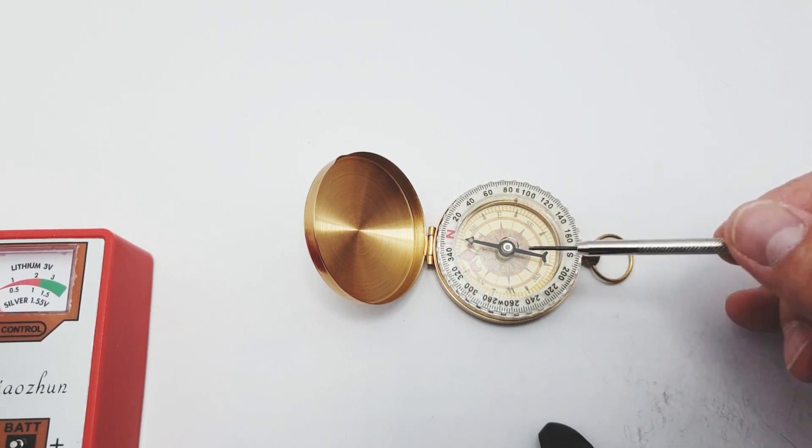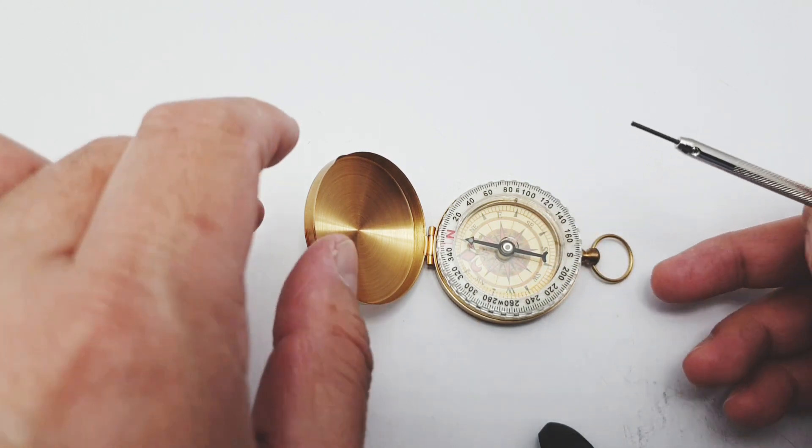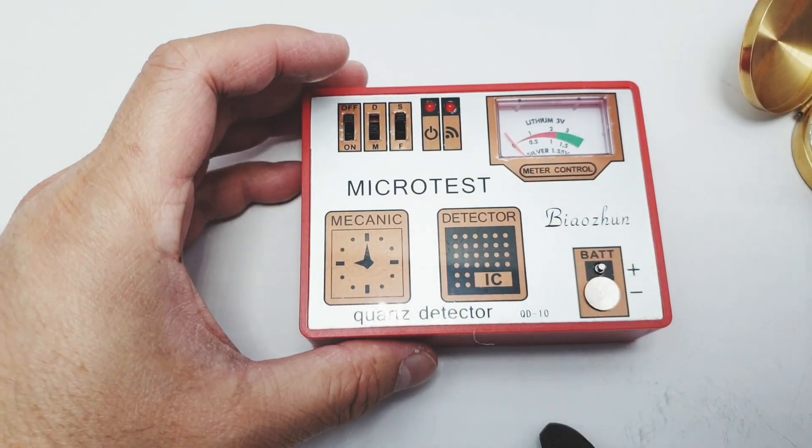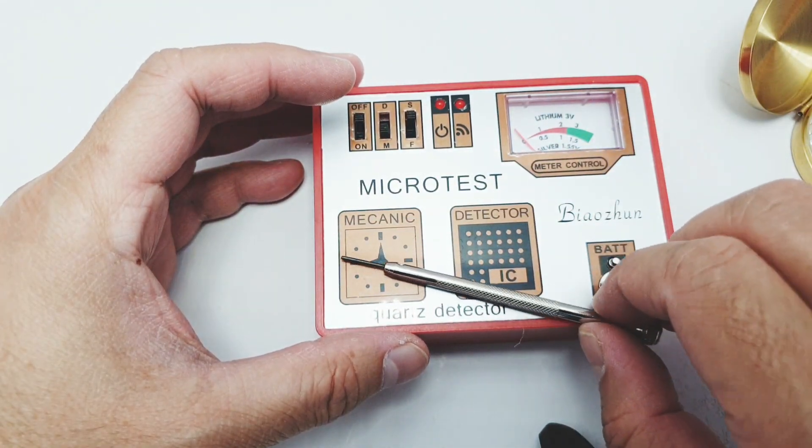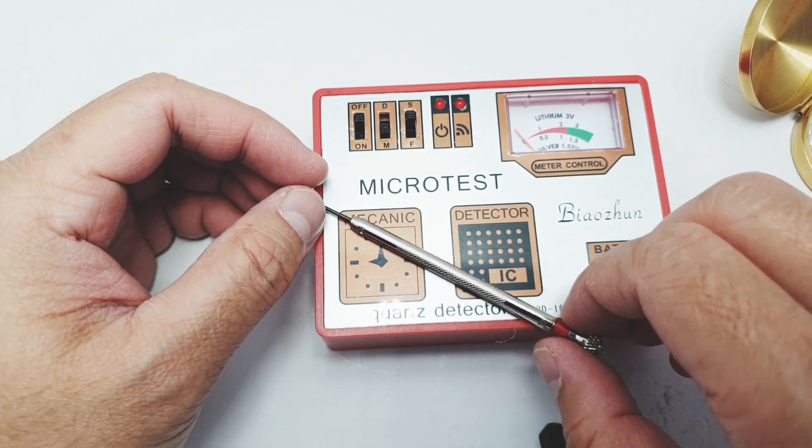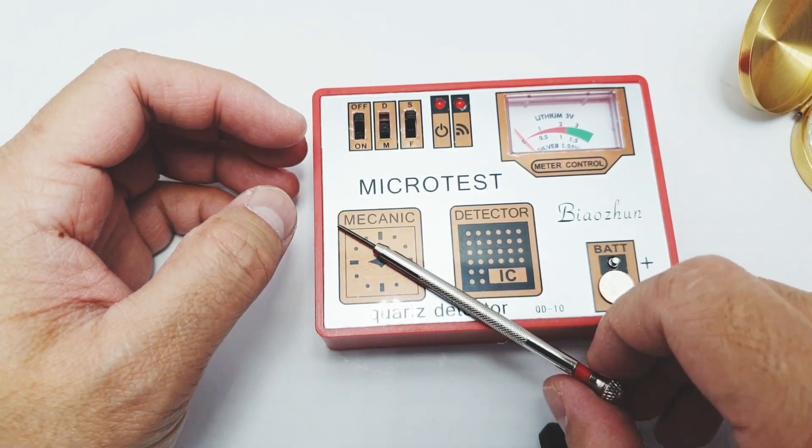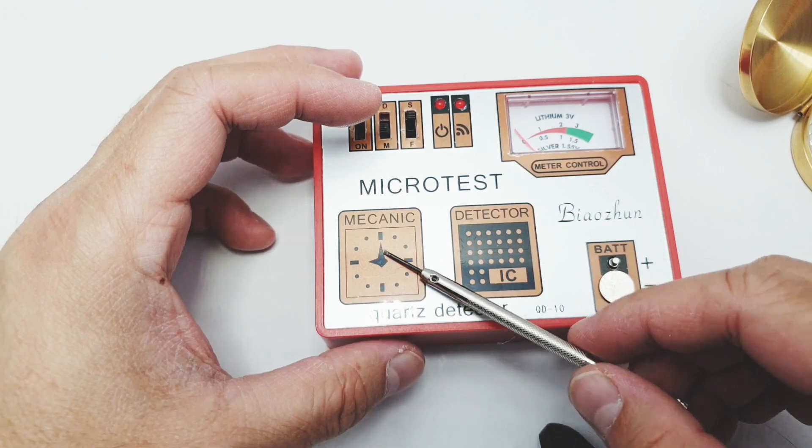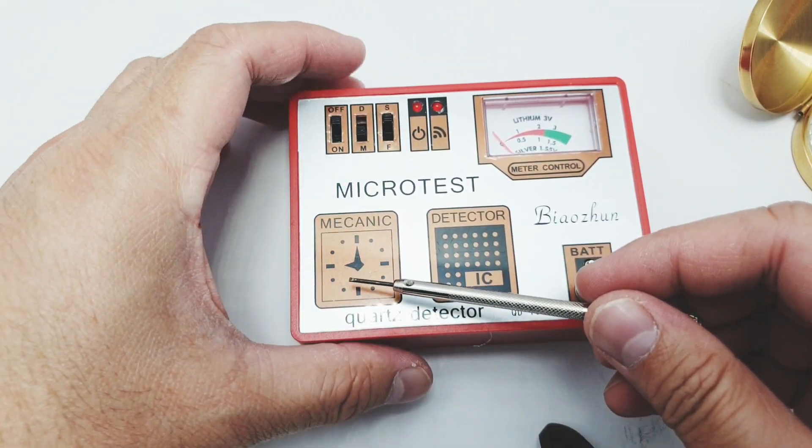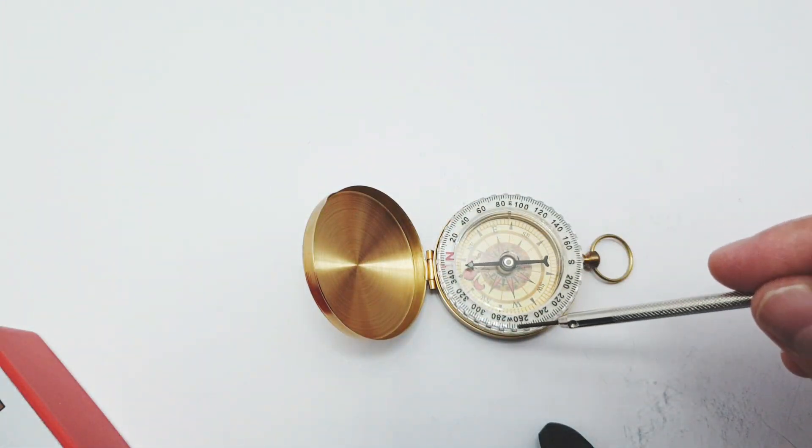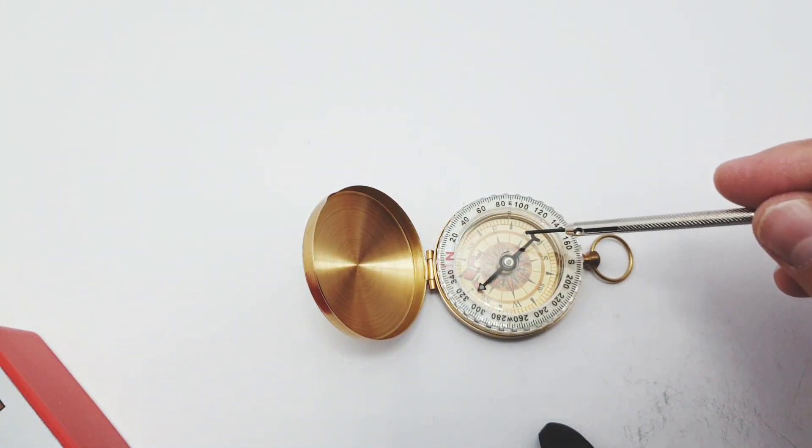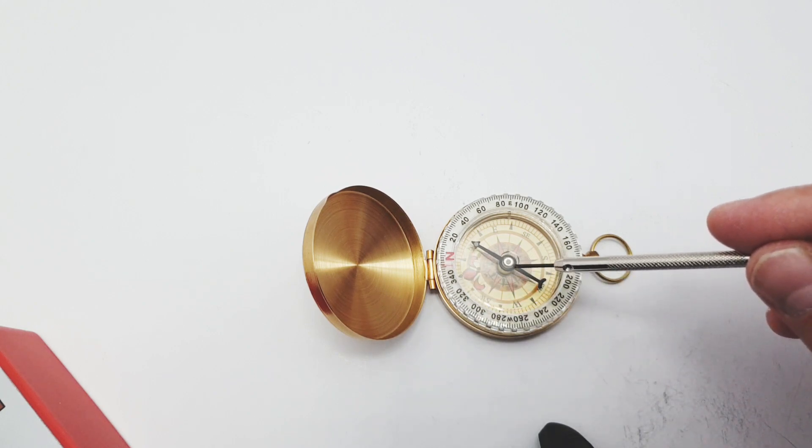Now to magnetize the screwdriver again, just place it on this part of the tester while the tester is off and just place it on top of it for a couple of seconds. And now this screwdriver will be magnetized again. As you can see the needle of the compass is moving again.